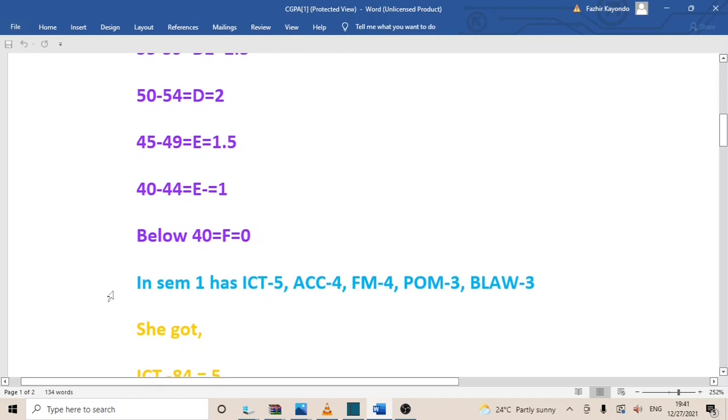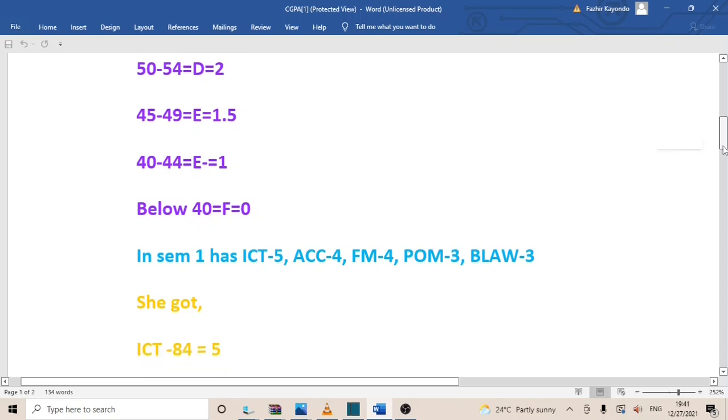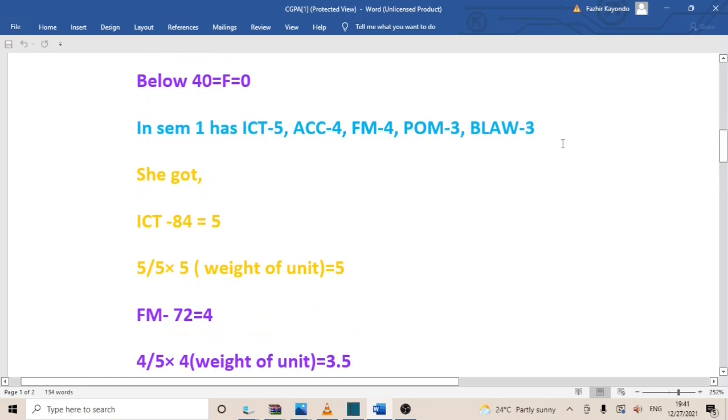If I told in a particular semester Carol gets - this is semester one - these are the total weights of the semester. ICT is having 5, Accounting 3, FM 4, POM 3, and BLAW 3. If I told that those are the weights, the credit units for those particular course units - ICT, Accounting, FM, POM, and BLAW.